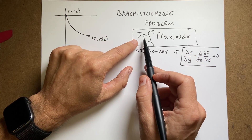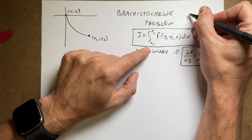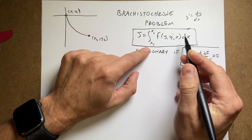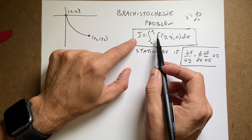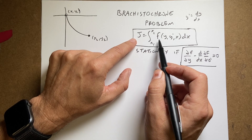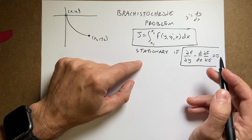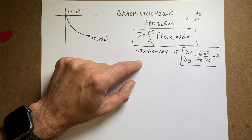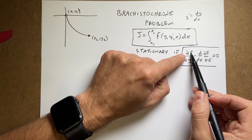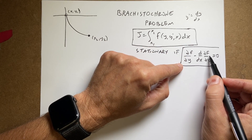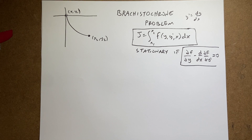Here is the big deal. If I have some integral evaluating a function f that depends on y, y′ (where y′ is dy/dx), and x, and I'm integrating over x — I want to minimize the function that minimizes this integral. The function that does so will satisfy the Euler-Lagrange equation. It's a stationary state, so it could give a minimum or maximum. Taking the partial of f with respect to y, minus the derivative with respect to x of the partial of f with respect to y′, set equal to zero — that constraint gives the function that minimizes the problem.